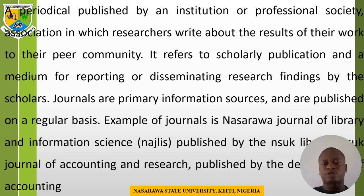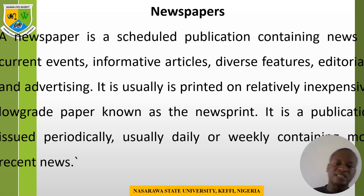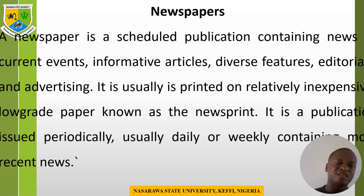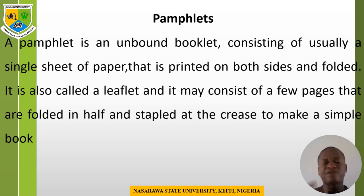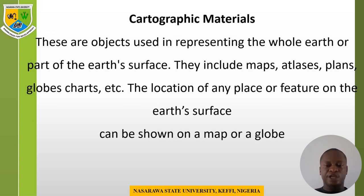A newspaper is a scheduled publication containing news, current events, informative articles, diverse features, and advertising, usually printed on low-grade paper known as newsprint, issued periodically — usually daily or weekly. Examples include This Day and Vanguard. Any information resource with less than 49 pages is referred to as a pamphlet, which is an unbounded booklet consisting of a single sheet of paper printed on both sides.